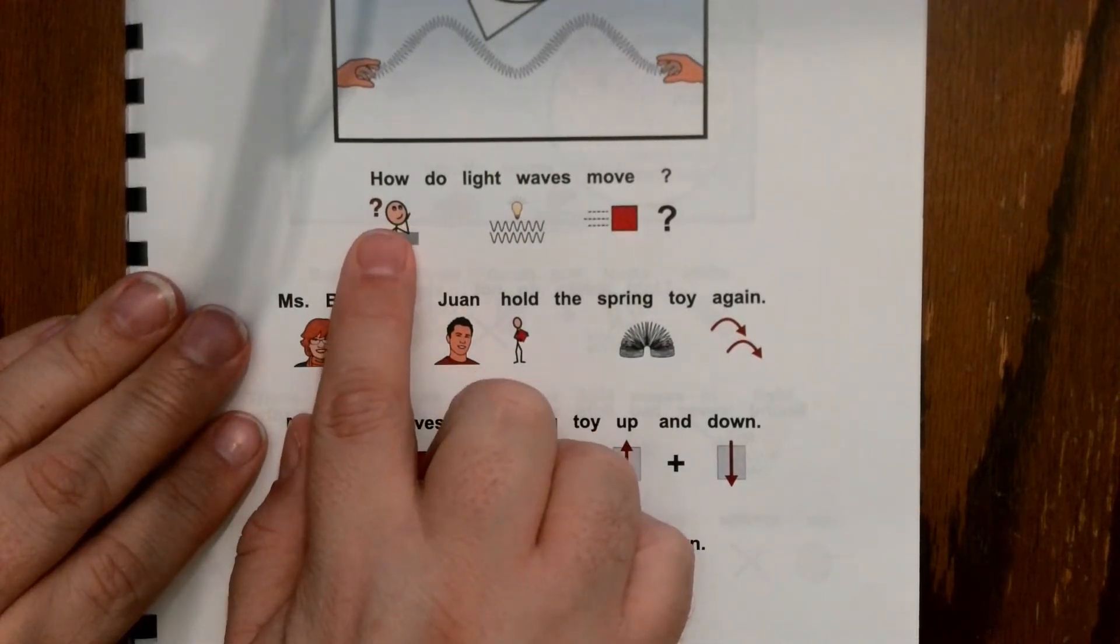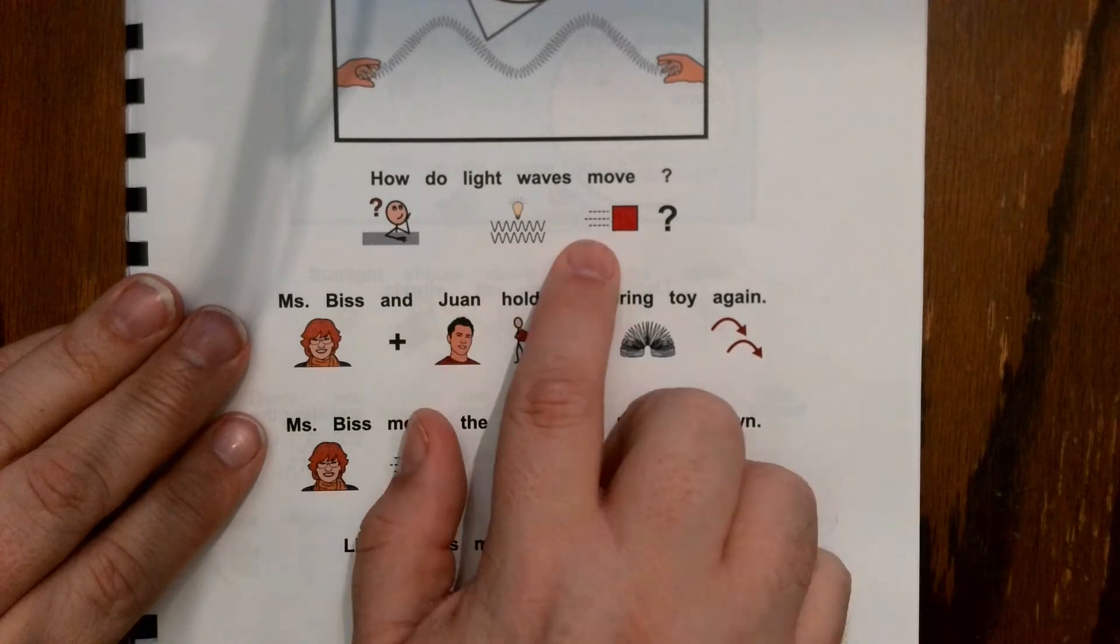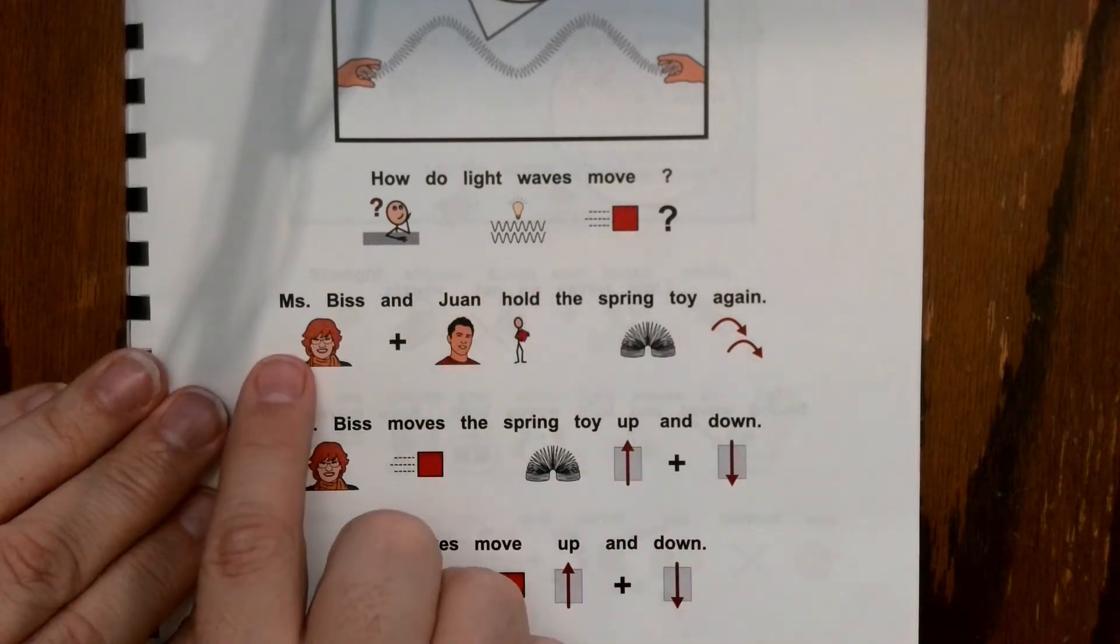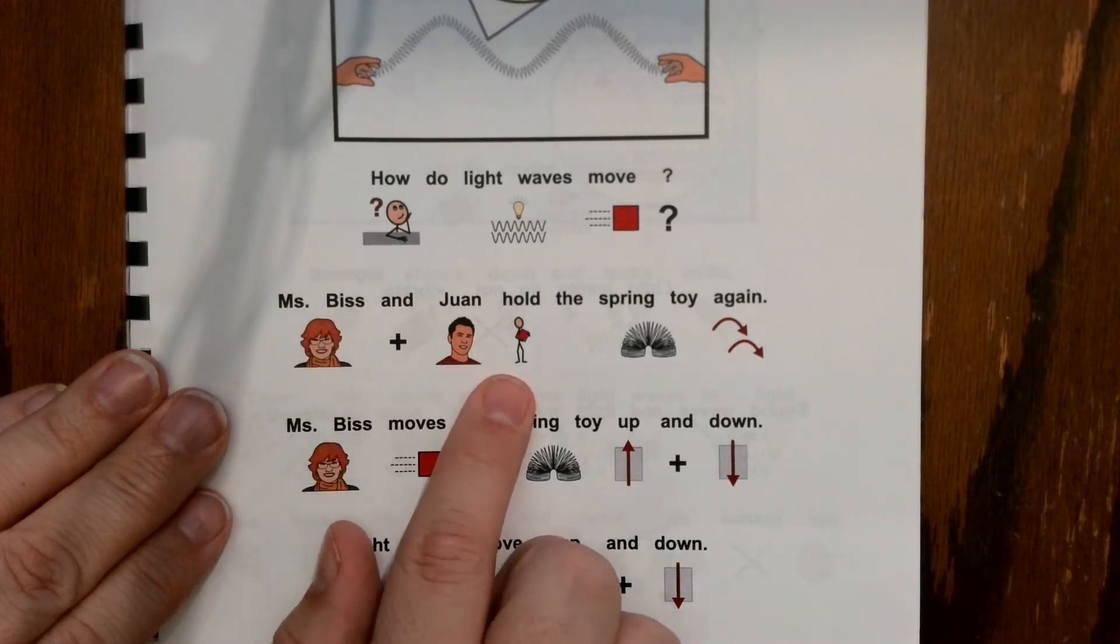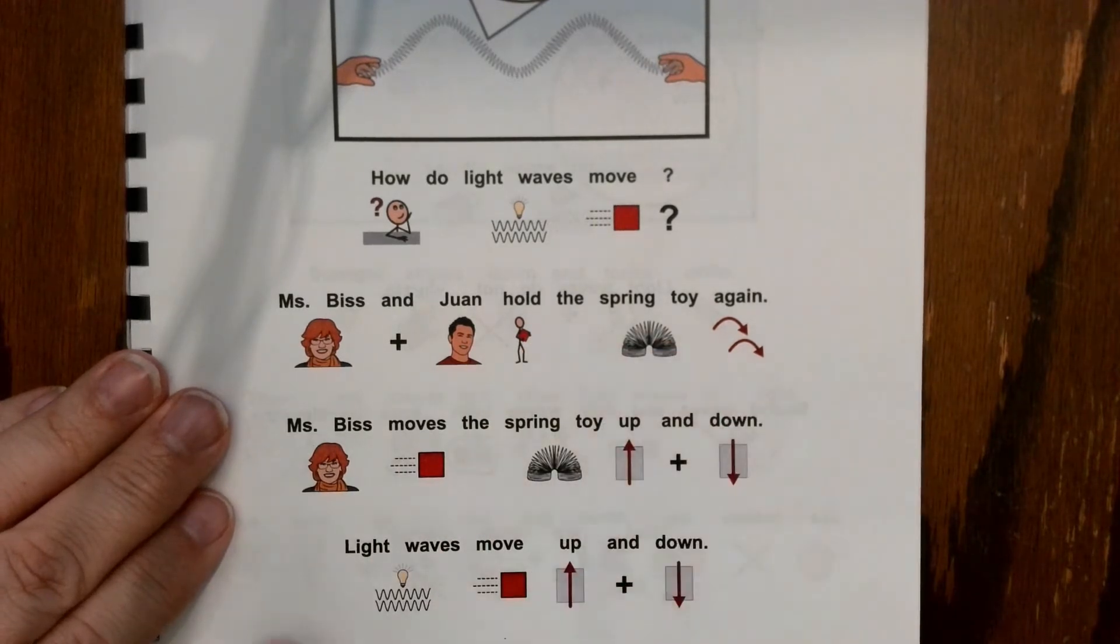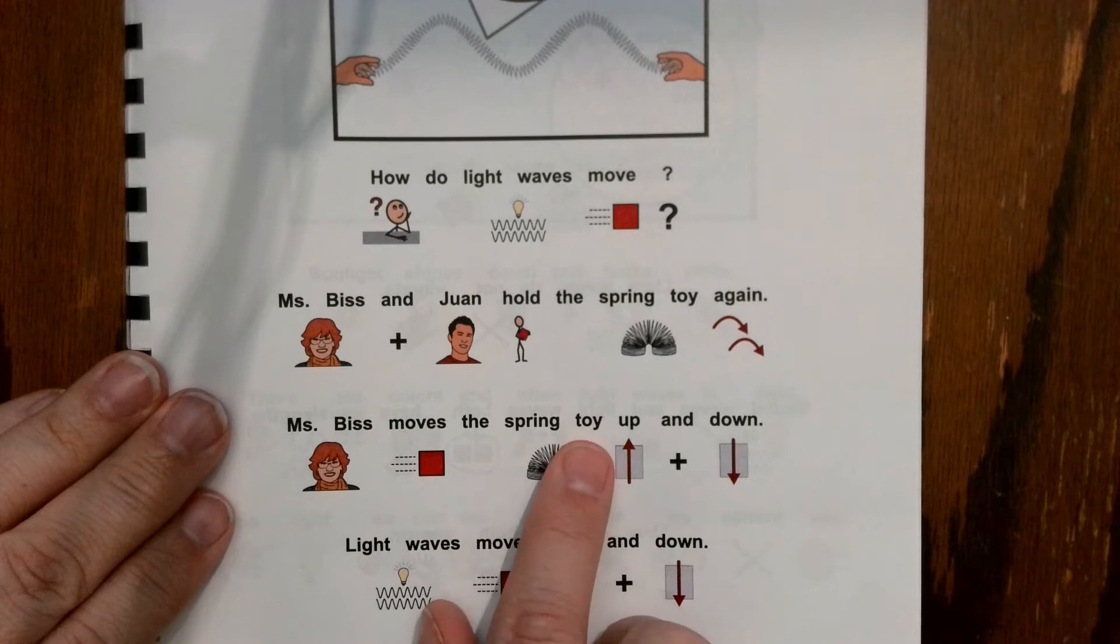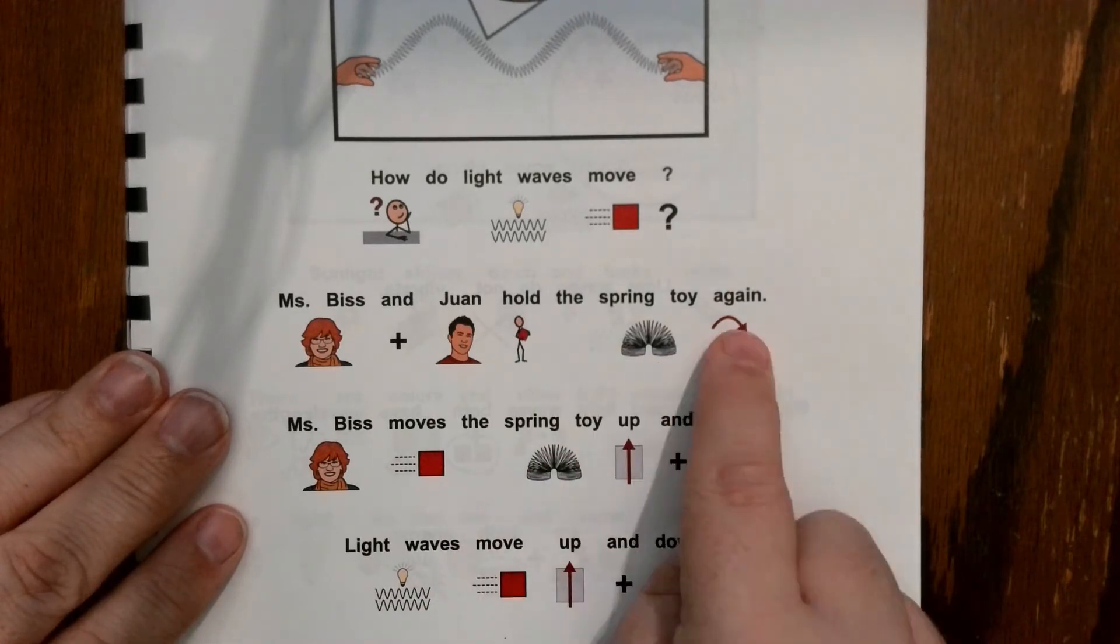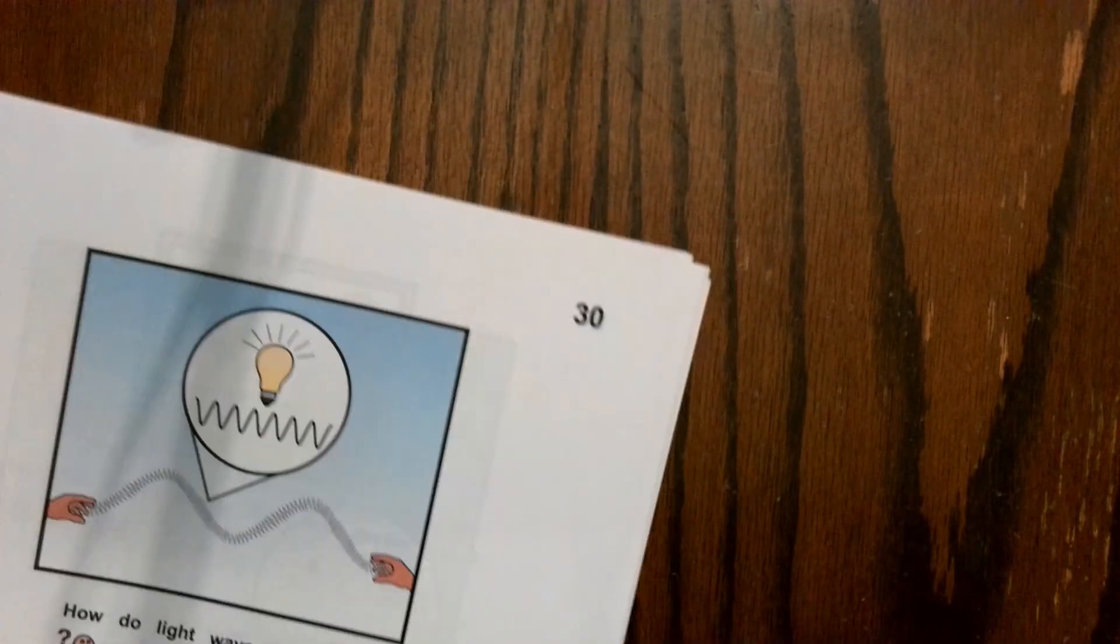Here we go. How do light waves move? Miss this and one hold the spring toy again. Miss this moves the spring toy up and down. Light waves move up and down. Turn the page.